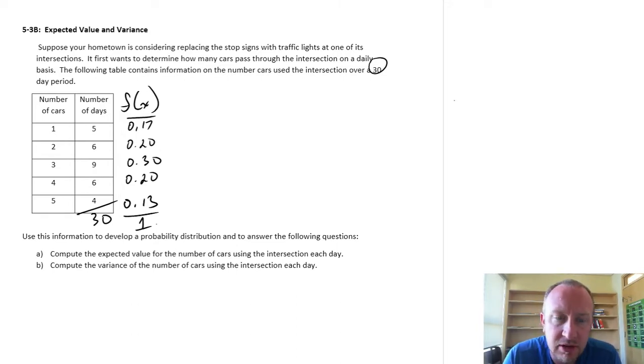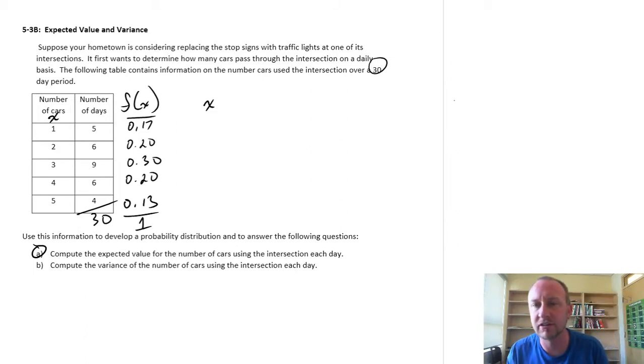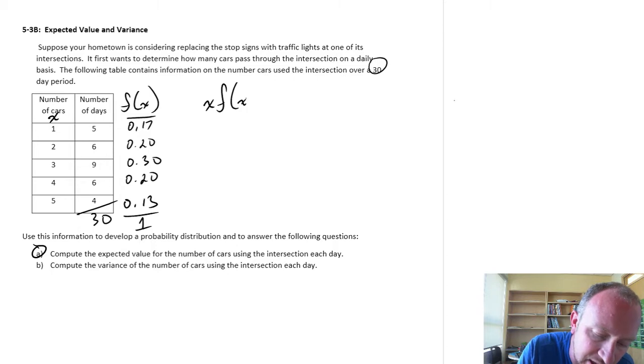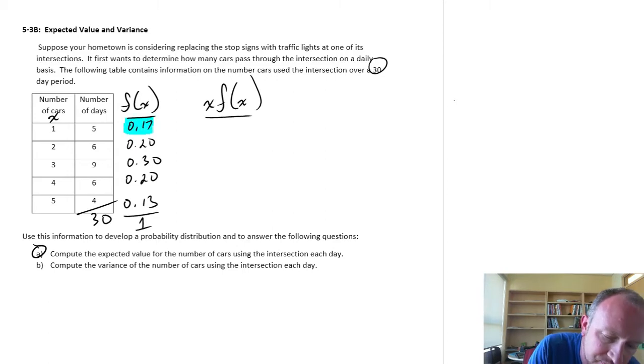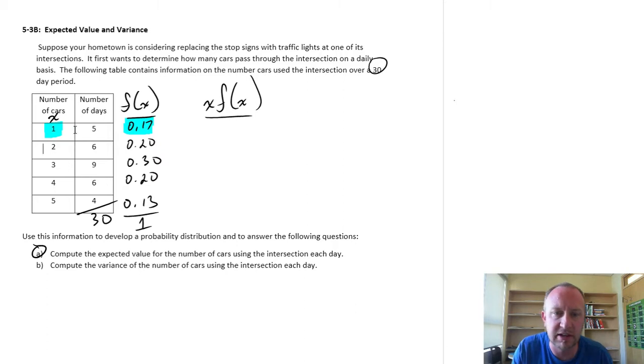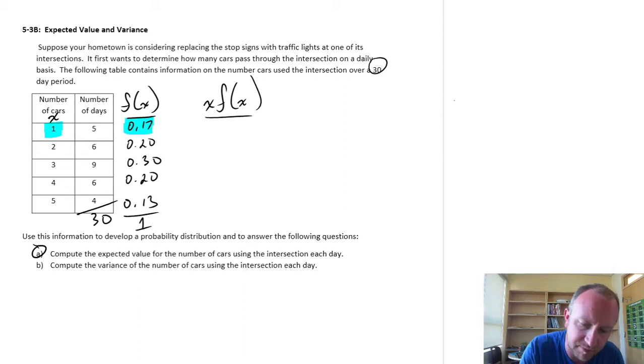So now what we need to do in order to go through part A: compute the expected value for the number of cars. This would be the average number of cars per day that are using the intersection. There's a couple more steps that we need to do. The next one is to calculate for each value of that discrete variable, this number of cars, and multiply that by the frequency associated with that value. So the first one, let me get my calculator here, this is going to be 0.17 times 1, so 0.17. That's easy enough.